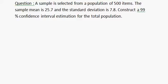The question is: a sample is selected from a population of 500 items. The sample mean is 25.7 and the standard deviation is 7.8. Construct a 99% confidence interval estimation for the total population.